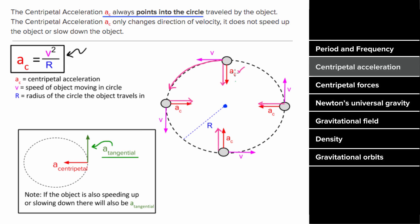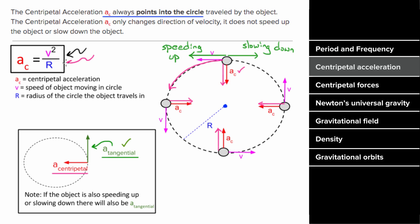If the object is going in a circle and speeding up, there's a component of acceleration in the direction of the velocity. And if the object is slowing down, there's a component of acceleration in the opposite direction to the velocity. So centripetal acceleration changes the direction of the velocity, and tangential acceleration changes the magnitude of the velocity. But the formula v squared over r is only giving you the magnitude of the centripetal acceleration; it does not account for any tangential acceleration.